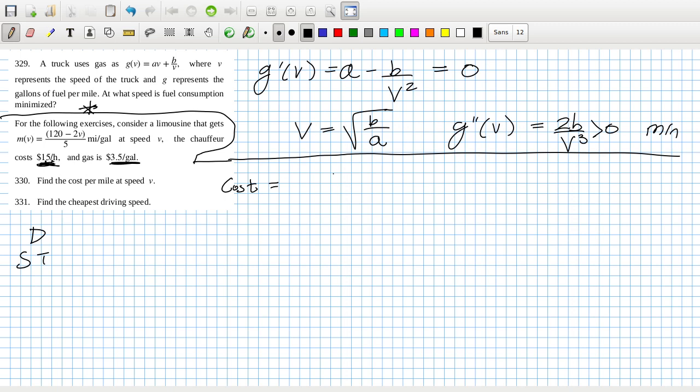Okay, so the cost for one mile. Well, first we need to get the time because the chauffeur is fifteen dollars an hour. So the time is the distance, which is one, over the speed, which is v, times fifteen. That's that part. That's unrelated.